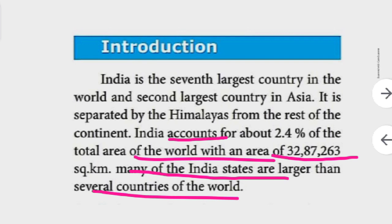To summarize the introduction: India is the 7th largest country in the world and 2nd largest in Asia. It is separated by the Himalayas from the rest of the continent. The world's total area is 32 lakh 87,263 square kilometers, and India covers only 2.4 percentage of that.